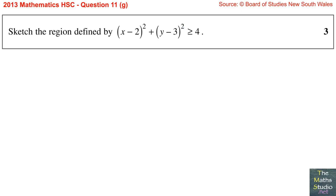Question 11, Part G. Sketch the region defined by (x minus 2)² plus (y minus 3)² greater than or equal to 4.